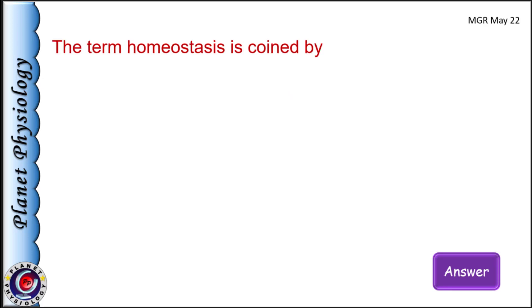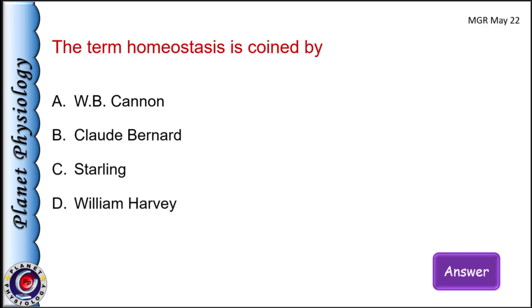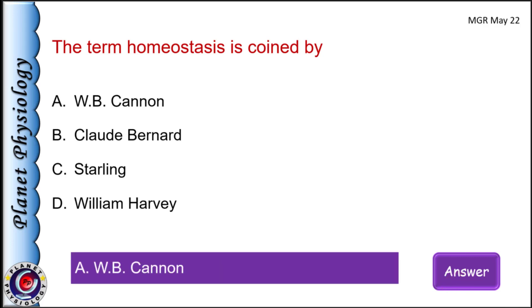The term homeostasis is coined by: A) W.B. Cannon, B) Claude Bernard, C) Starling, and D) William Harvey. It is Walter B. Cannon, the American scientist, who coined the term homeostasis. Claude Bernard is a French physiologist who coined the term milieu intérieur, meaning internal environment, referring to extracellular fluid. Starling coined the term hormone and William Harvey put forth the theory of blood circulation.